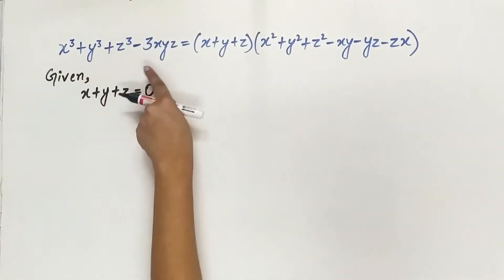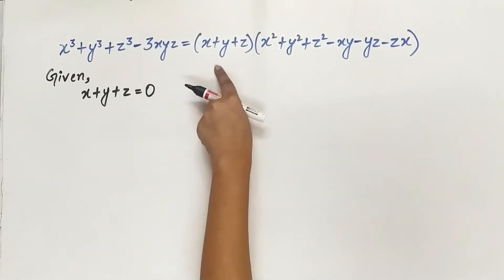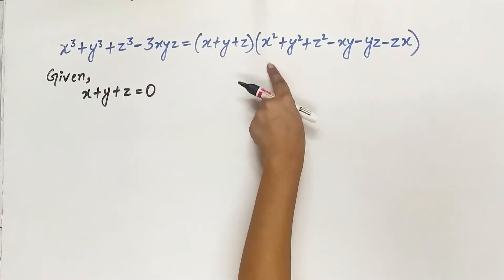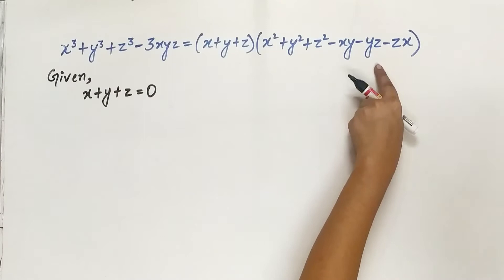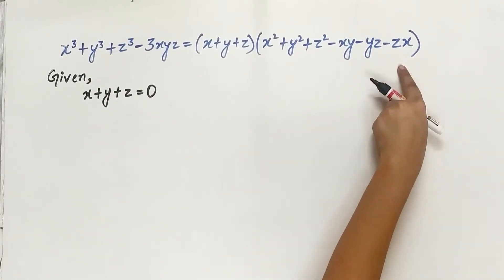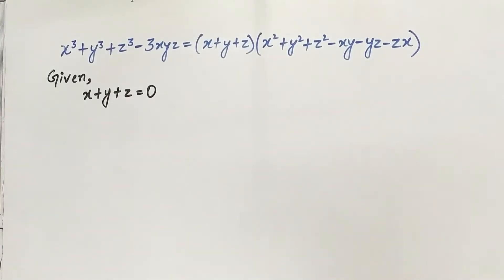x cubed plus y cubed plus z cubed minus 3xyz is equal to x plus y plus z, multiplied by x squared plus y squared plus z squared minus xy minus yz minus zx.